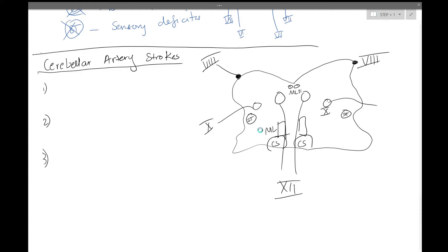So it's going to be the spinothalamic tract. And then there's the inferior olivary nucleus here. This is not the most detailed diagram, as you can see, but these are all the structures that are worth knowing about for these stroke syndromes.